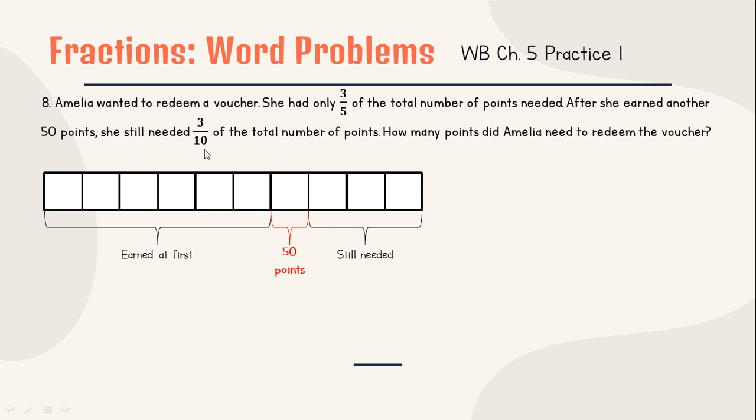Because needed 3/10, we're gonna make these boxes into 10, so just cut it: 1, 2, 3, 4, 5, 6, 7, 8, 9, and 10. 3/10 needed. So we know that this 3/10 still needed. And then we have this unknown. Because this is unknown, it will belong to 50 points. Now go to the next.